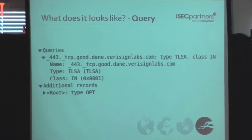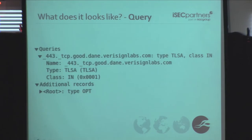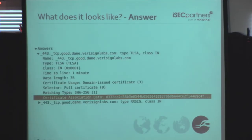What does this look like in a Wireshark capture? When making an HTTPS request to good.dane.verisignlabs.com, we send a TLSA request to underscore-443 dot underscore-TCP dot the domain. In the response we get the certificate usage, matching type, selector, and signature. That highlighted 03 value is the actual SHA-256 of the record you're about to receive from that HTTPS server. You'll also notice the verisignlabs.com RRsig along with it — so this TLSA record was just validated using DNSSEC.